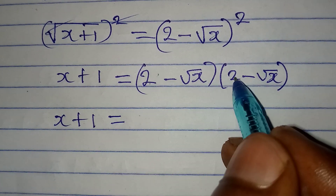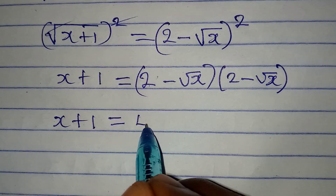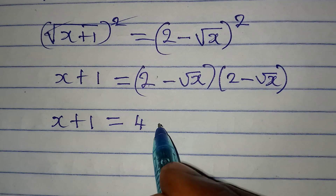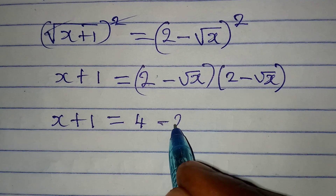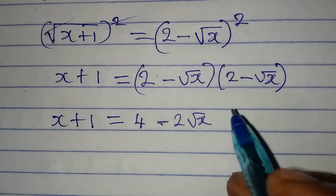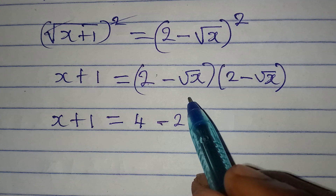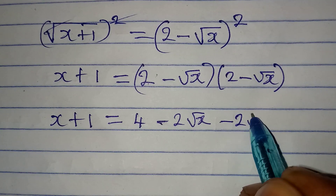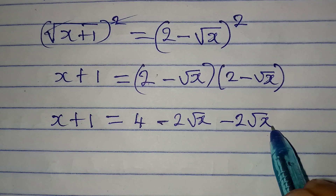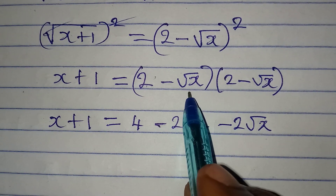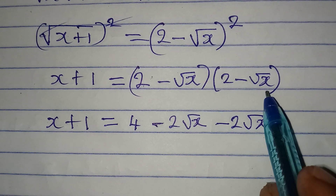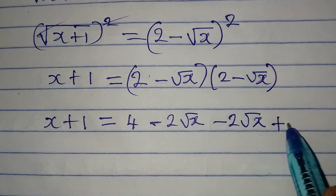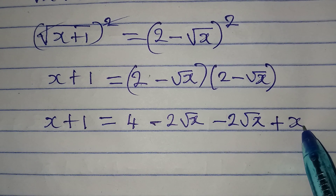Expanding the right side: 2 times 2 gives 4, 2 times negative root x gives minus 2 root x, negative root x times 2 gives another minus 2 root x, and negative root x times negative root x gives positive x.